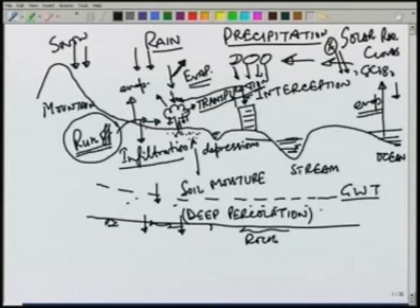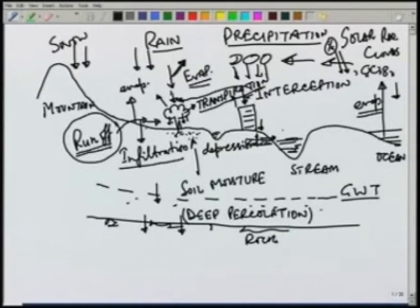Some part of the water which infiltrates may again appear on the surface. For example, if we have an impermeable layer here, the water infiltrating inside the ground may join the runoff or may appear on the surface again. This is known as interflow. Depending on how fast or how slow it appears, it may be a delayed appearance on the surface or it may come very fast.